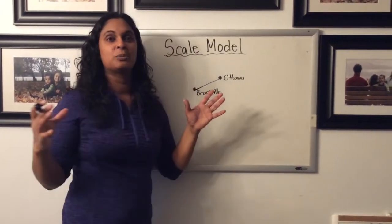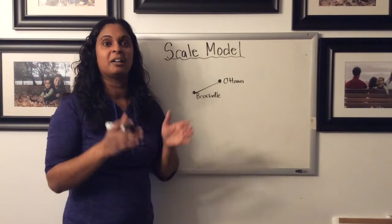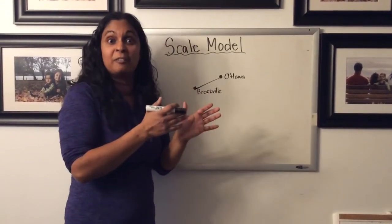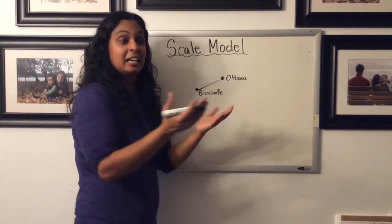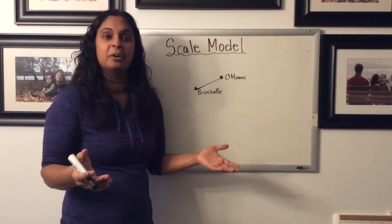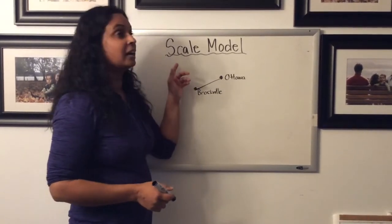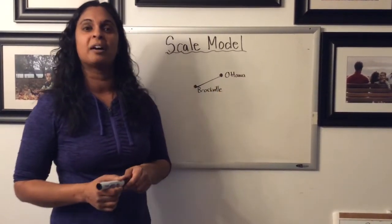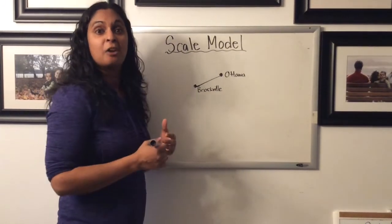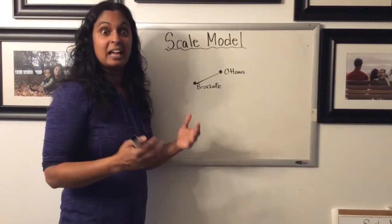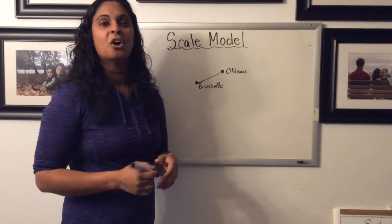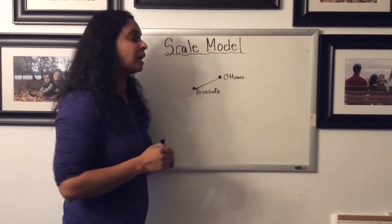We use a scale model to shrink it down so we can see it on a map or in a book. Then, using the key of our scale model, we figure out how much that is in real life. Usually, it's just an estimate or approximate amount.